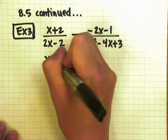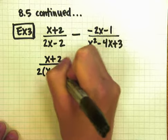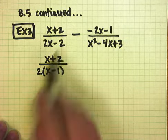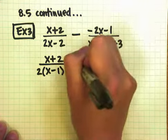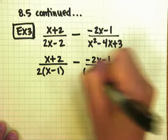When I factor the denominators, on the left, I get 2 times x minus 1, because 2 times x is 2x, and 2 times negative 1 is negative 2.